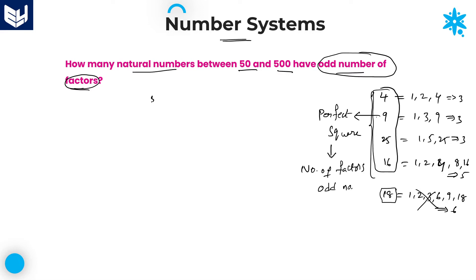The range given is: how many natural numbers are there between 50 and 500 having odd number of factors? As we know, for any perfect square, the number of factors is always odd. So we need to find: after 50, what is the first perfect square, and before 500, what is the last perfect square. After 50, the first perfect square is 64 — that is 8 squared (since 7 squared is 49, which is before 50). And before 500, the last perfect square is 484, which is 22 squared.